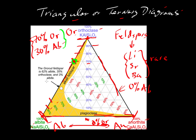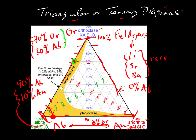Let's take another example: a mineral that is ninety percent albite and ten percent anorthite. Again, there is no orthoclase, so we'd be on the zero percent orthoclase line — remember, a hundred percent orthoclase is at the apex, and zero is down along the base. Ninety percent albite would be along that ninety percent contour, and ten percent anorthite along that contour. So this mineral plots right at that point.